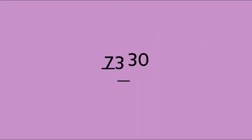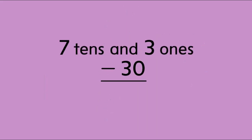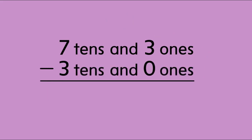I'll subtract. Seventy-three is seven tens and three ones. Thirty is three tens and zero ones. Three ones minus zero ones is three ones.